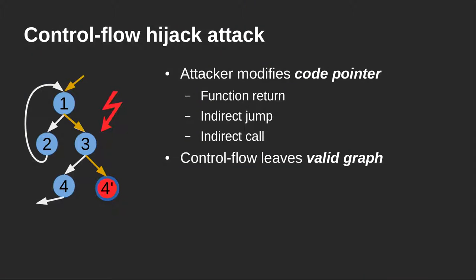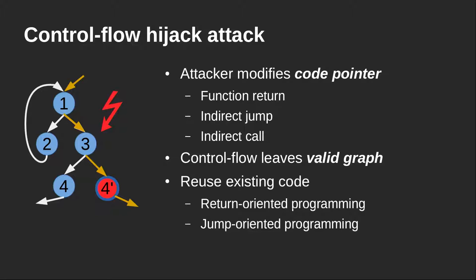After modifying a code pointer through a memory corruption vulnerability, the control flow leaves the valid control flow graph and starts executing new instructions at a different location. The attacker can then reuse different parts of existing code in the execution image — either through return instructions in return-oriented programming, or through indirect jump or call instructions in jump-oriented programming.